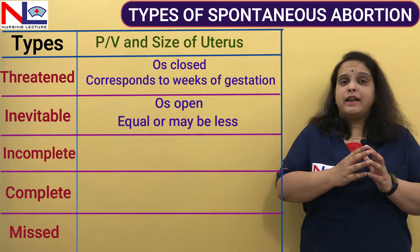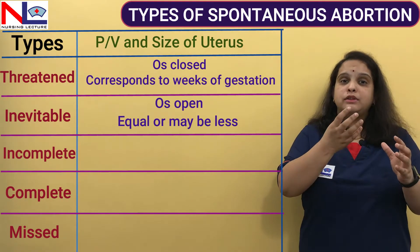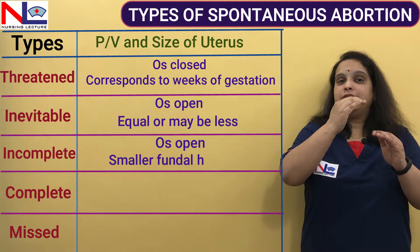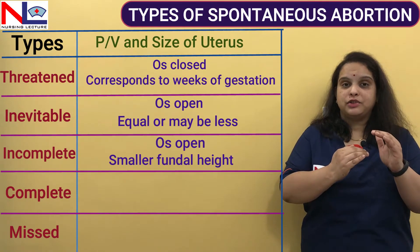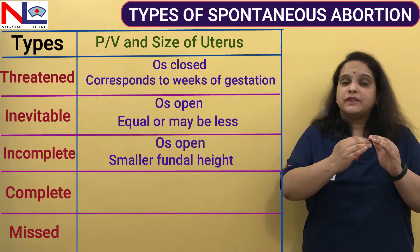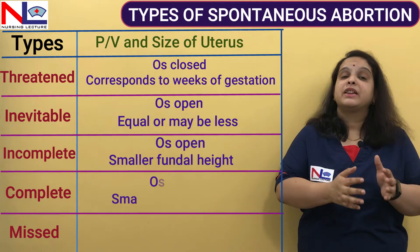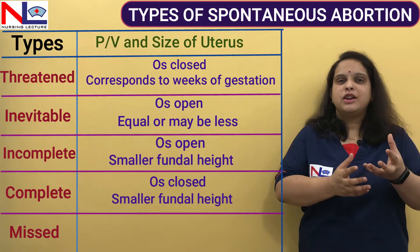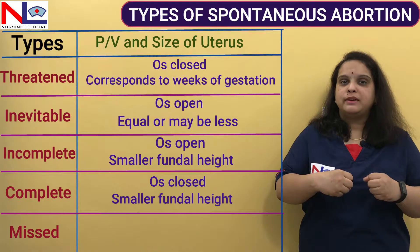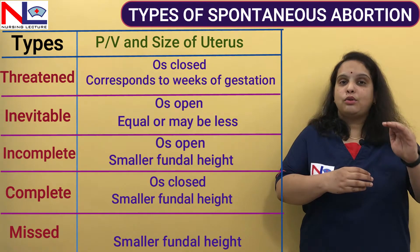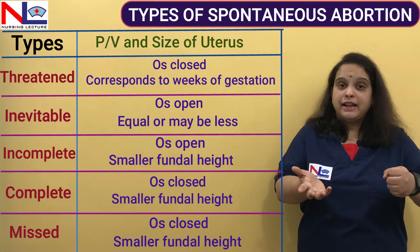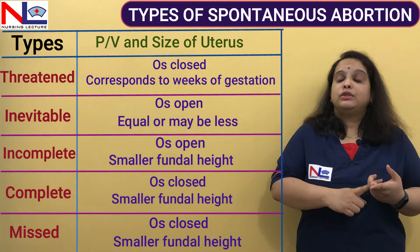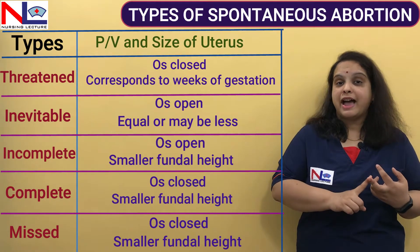In incomplete abortion, the internal os is open, but the height of the uterus is less in comparison to the week of gestation because some part has come out. In missed abortion, the fetus is dead, shrunken, mummified, or macerated, and the liquor amnii is reabsorbed — so the height is also reduced. The os remains closed because there is no bleeding, and the height is less than expected for the week of gestation.